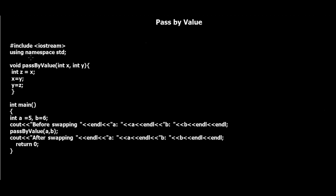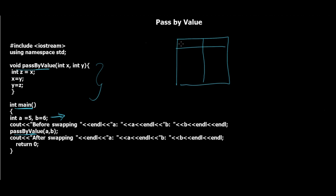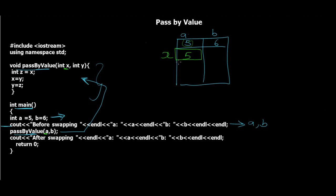Let's see what happens behind the scenes. We have the code on the blackboard: the header file, using namespace std, the user-defined passbyvalue function, and int main. In memory, when execution happens, we have a memory block named a with value 5, and another named b with value 6. When the passbyvalue function is called, control transfers to that function, and a new instance variable x is created in memory with value 5 copied from a.